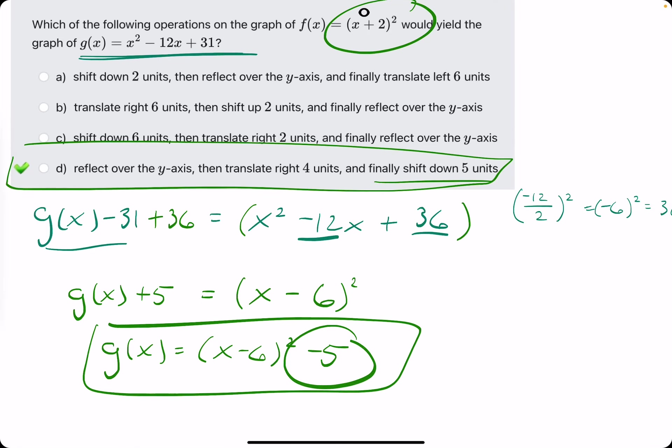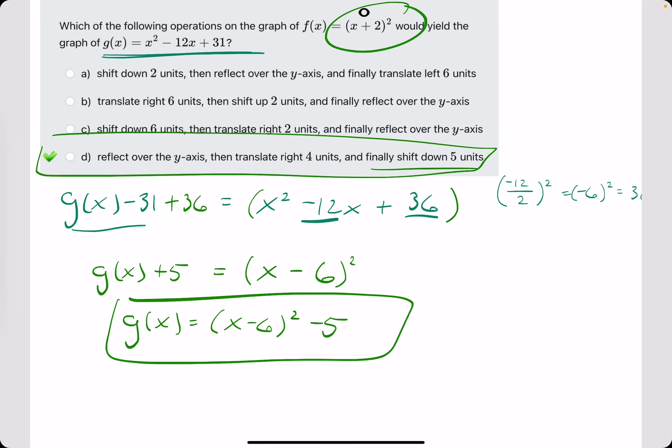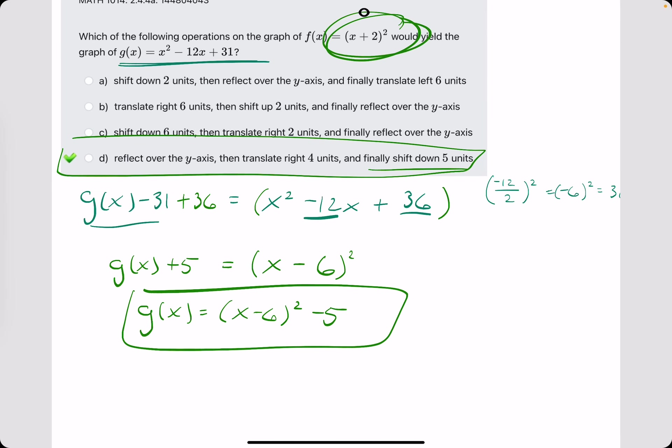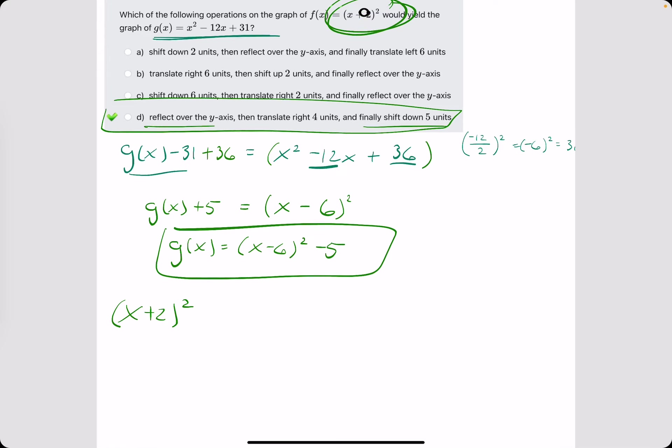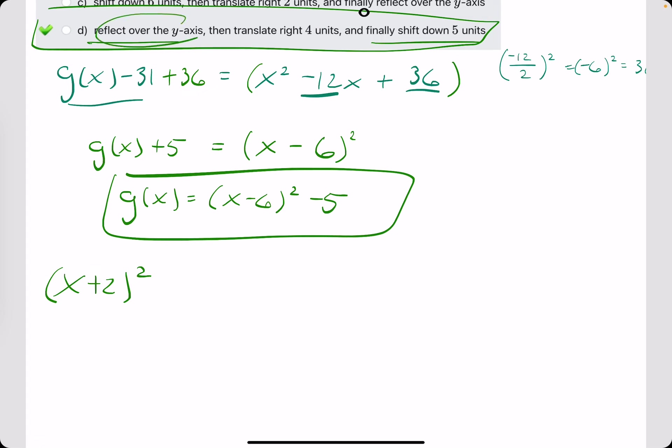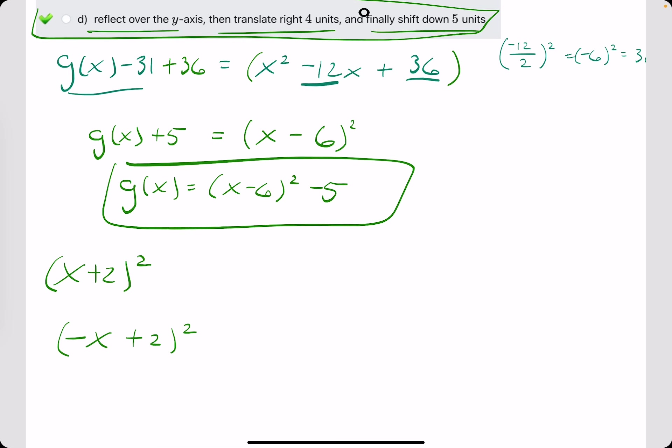So naturally D is going to be our answer. I'll talk very briefly about how D is our answer, like starting with f(x) and working my way to g(x), but I'm not going to spend a whole lot of time on it. Let's get started. x plus 2 squared is the original function. Let's start with the first transformation, reflection over the y-axis. To reflect over the y-axis, we negate the x term. That's all we do. So negative x plus 2 squared. Then translate right 4 units. To translate right 4 units, we replace x with x minus 4.